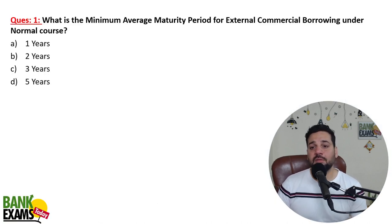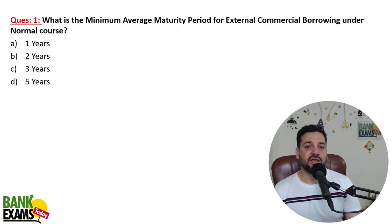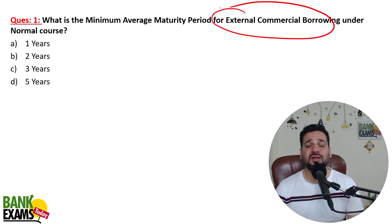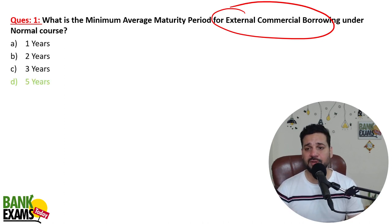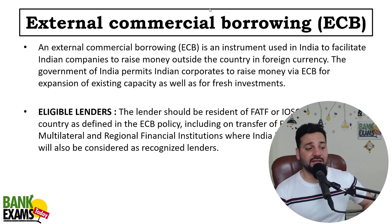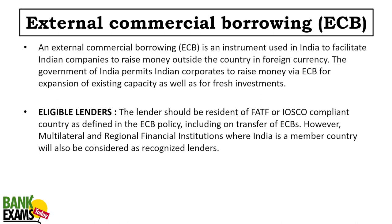So the first question: what is the minimum average maturity period for external commercial borrowing under the normal course? External commercial borrowing kya hai? It is an instrument used in India — jab Indian companies ko India se bahar loan lena hota hai, borrowings karni hoti hain India se bahar, to woh external commercial borrowing ke route se karte hain.